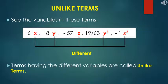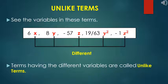Now, unlike terms. See the variables in these terms — 6x, 8y, minus 57z, 19/63y², minus 1z². In all the terms, the variables are different: x, y, z, y², z². These all variables are different. So, terms having different variables are called unlike terms.